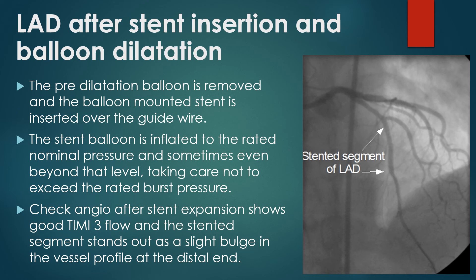The bulge is because of the natural tapering of the vessel from the proximal to distal portion of the stent. If the stent is not fully expanded, serial post-dilatations with non-compliant balloons are given.